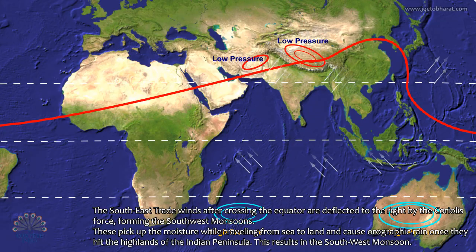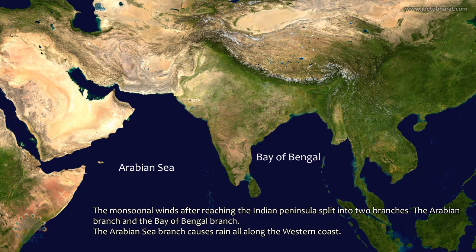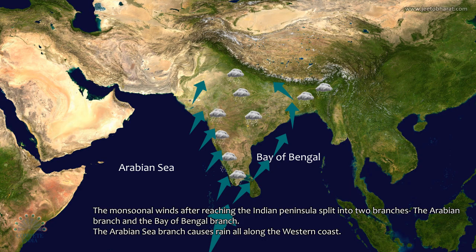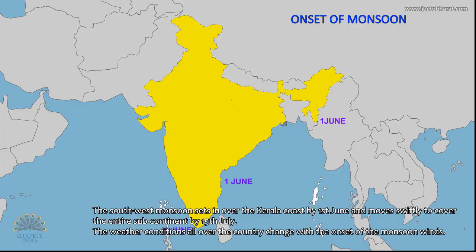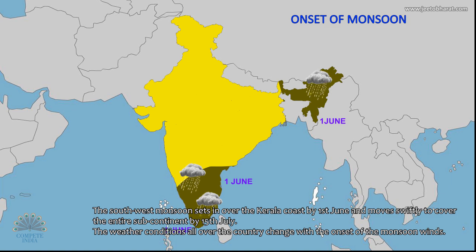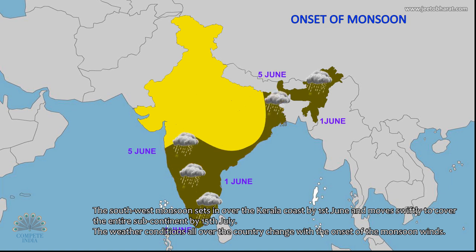The monsoonal winds, after reaching the Indian Peninsula, split into two branches: the Arabian branch and the Bay of Bengal branch. The Arabian Sea branch causes rain all along the western coast. The Bay of Bengal branch strikes the West Bengal coast and the southern slopes of the Shillong Plateau, and merges with the Arabian Sea branch over Punjab and Himachal Pradesh. The southwest monsoon sets in over the Kerala coast by 1st June and moves swiftly to cover the entire subcontinent by 15th July.